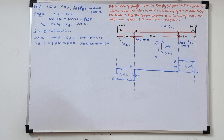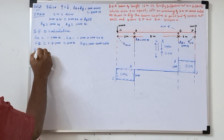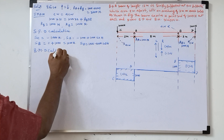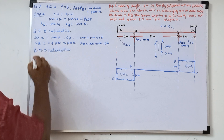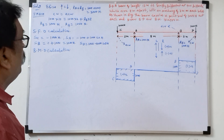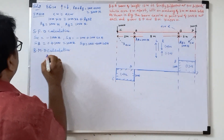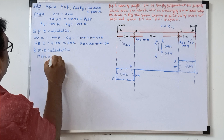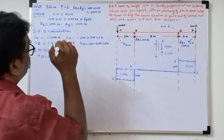Now we will go to the bending moment calculation. Bending moment at C and bending moment at D will become zero. Bending moment at D is equal to zero. Bending moment at C will be zero, because if you will take the moment about C, passing through the same point, and D — point passing through the same point — because moment is nothing but perpendicular distance.